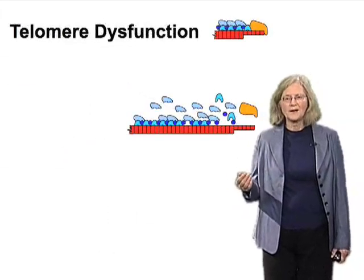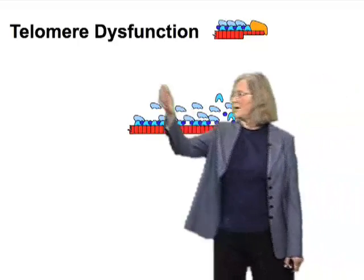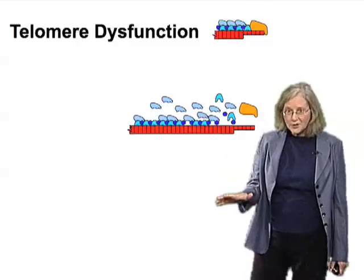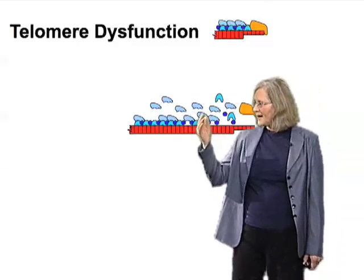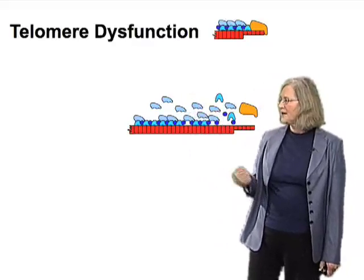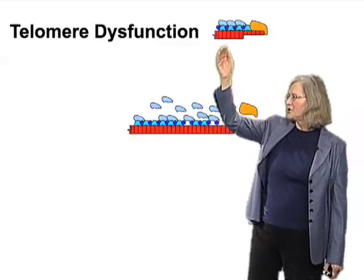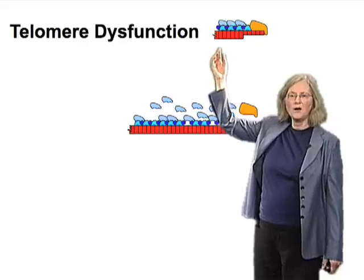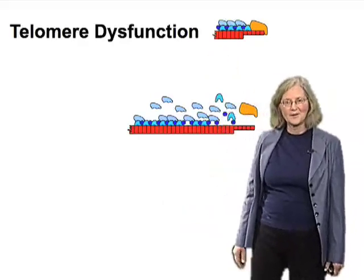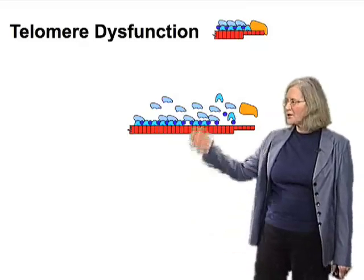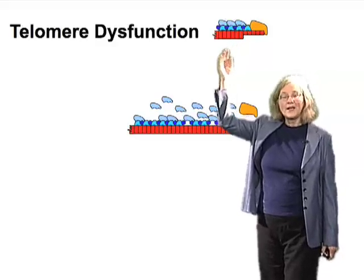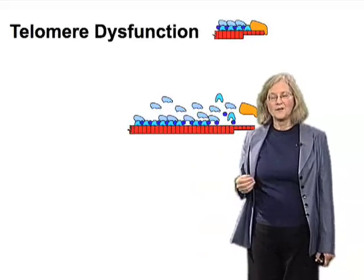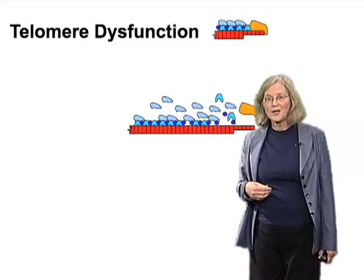If telomeres cease to function — and we use the term telomere dysfunction to describe the general state of a telomere not carrying out its capping and other functions — there are a couple of different ways this can happen. The first is if the tract of telomeric repeats is simply too short: not enough length to form the nice long array needed for higher-order structure. This kind of dysfunction caused by shortening of a telomere can happen naturally, and we'll get back to that, as it will be the focus of the third lecture in this series.